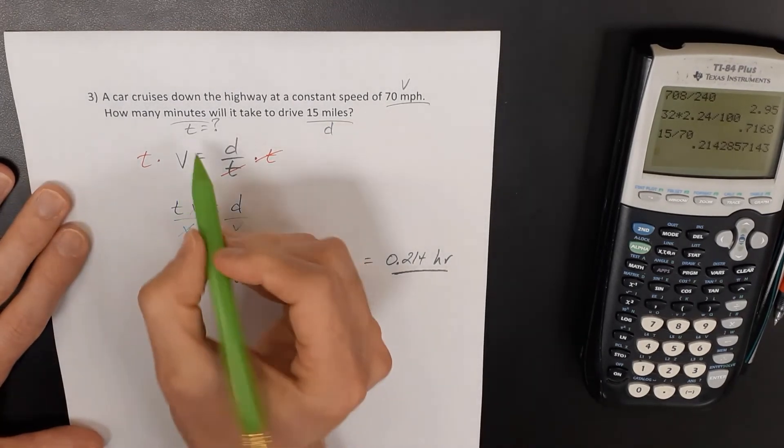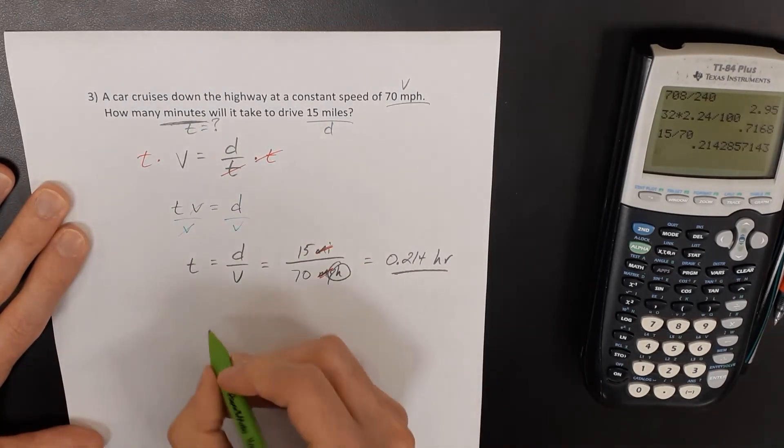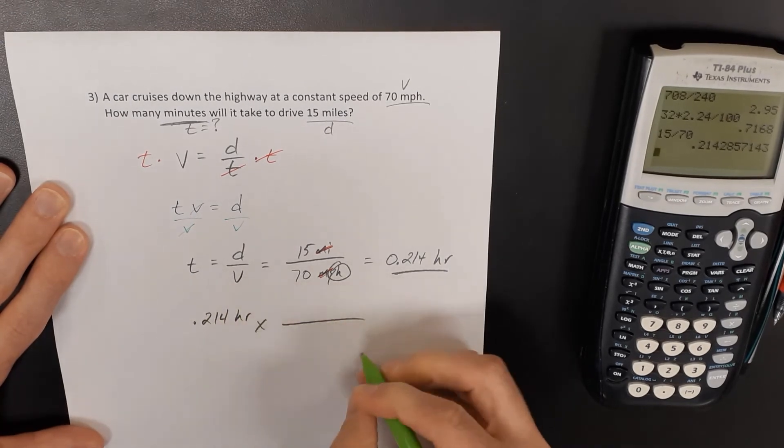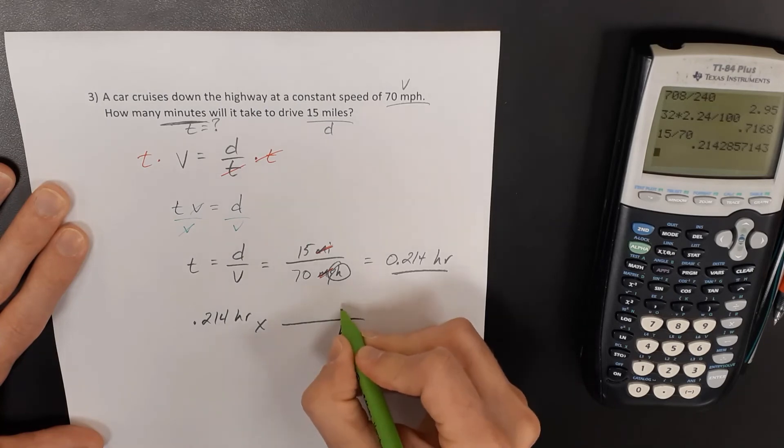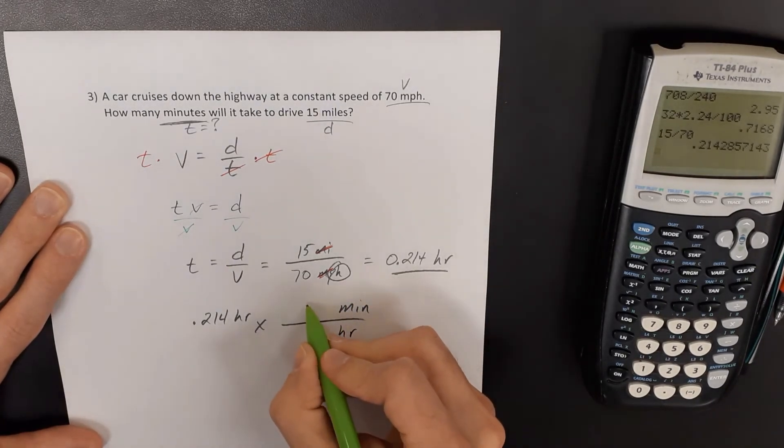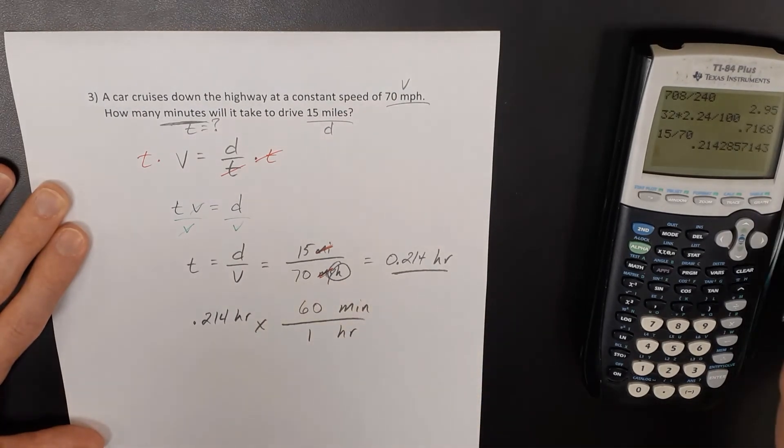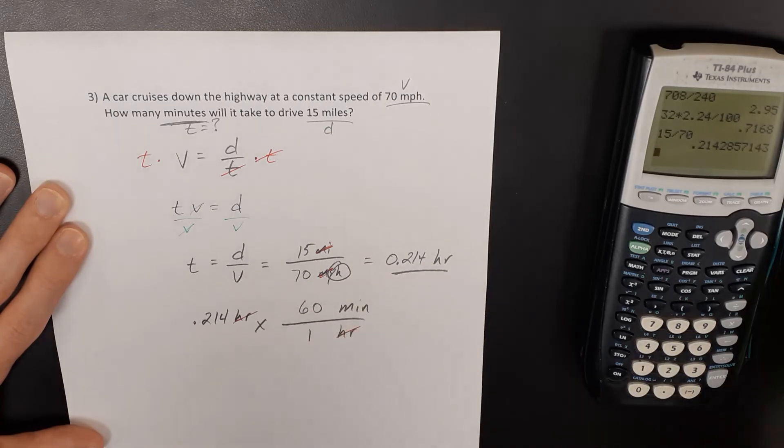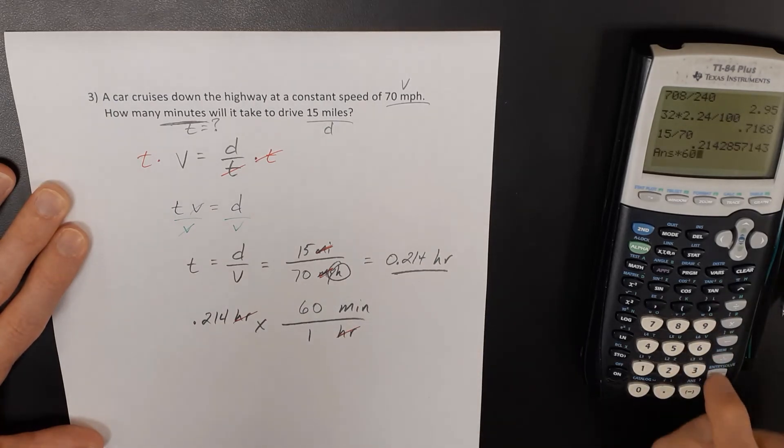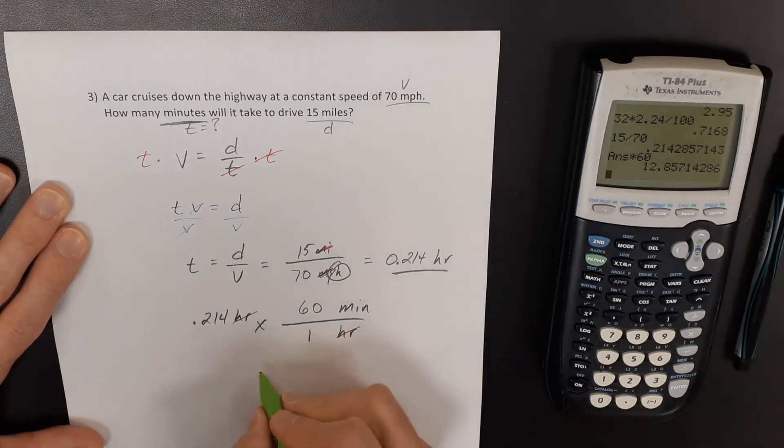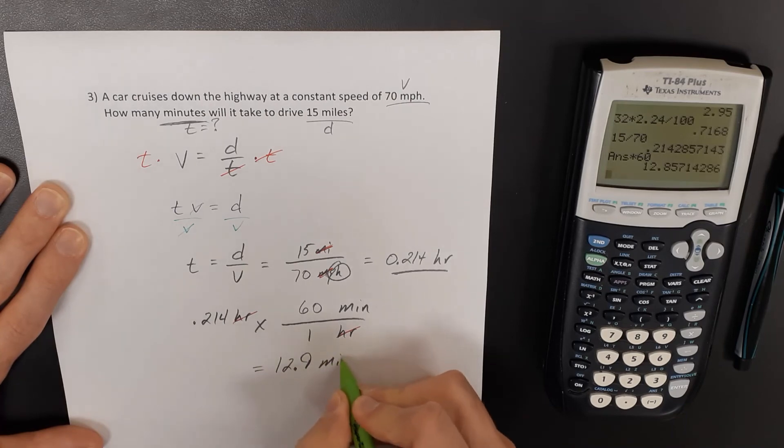And so the question says how many minutes. Well, now one more step. If I want to convert these hours into minutes, minutes are going on top of my conversion factor. There's 60 minutes in every hour. Hours divided by hours would cancel out. So if we multiply by 60, then I have right here 12.9 minutes.